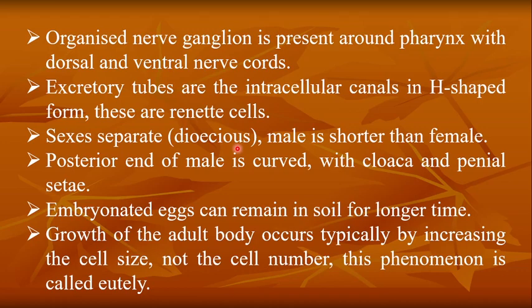Sexes are separate — dioecious. Unlike Fasciola hepatica where sexes were not separate, here male and female are distinct. The male is shorter than the female, and the posterior end of the male is curved, with a cloaca and penial setae — hook-like structures that help in copulation.